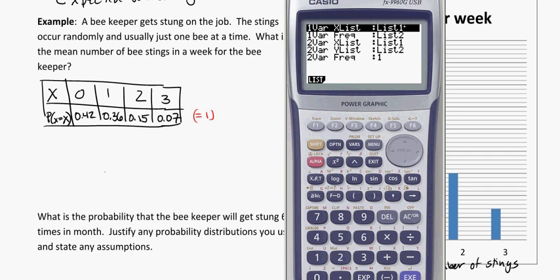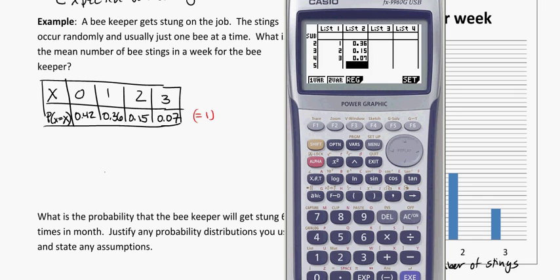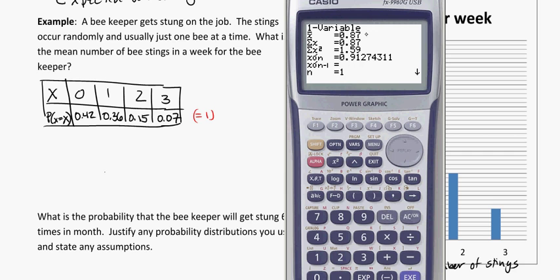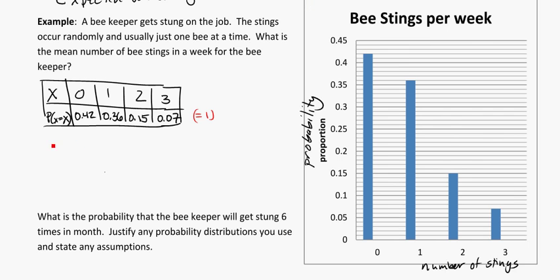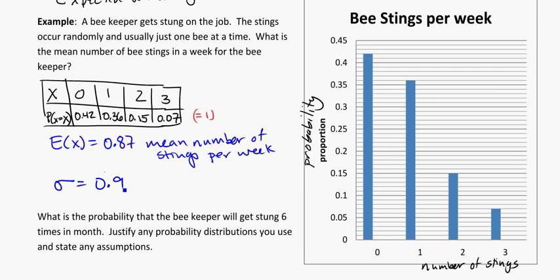Make sure that you're still set to list 1 and list 2. If that's good, you can go back to this window. Remembering that x bar gives us our mean value, that's 0.87 for this mean. And the standard deviation in this case is the x sigma, 0.912. So we could say the expected number of stings he'll get in a week is 0.87, the mean number of stings per week, and my standard deviation for that was 0.9.